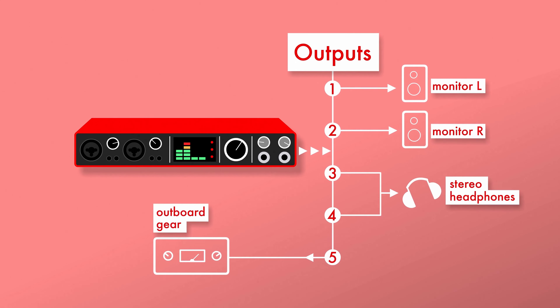For example, this is a Behringer Xenyx 302 USB, an entry-level USB mixer, which has an XLR/jack combo input and a few line inputs. It has some very basic controls on each input for EQ — called low and high — and also a pan control. As you'd expect, it has a USB port to connect to the computer, and therefore has an audio interface inside. So any combination of inputs can be recorded directly to the computer, but as a single stereo track.